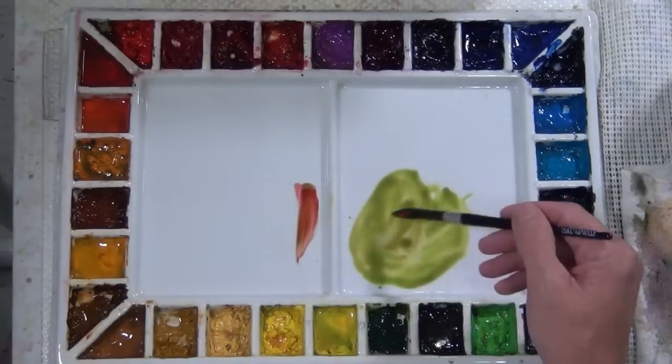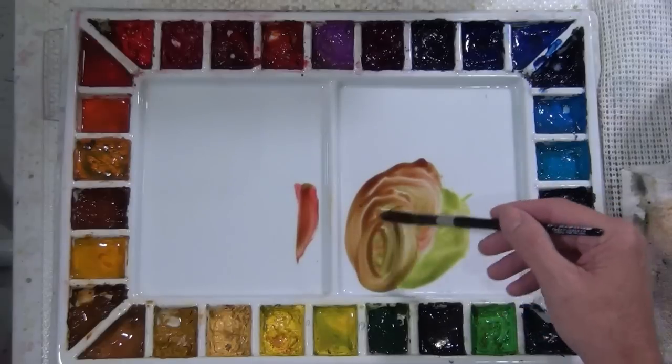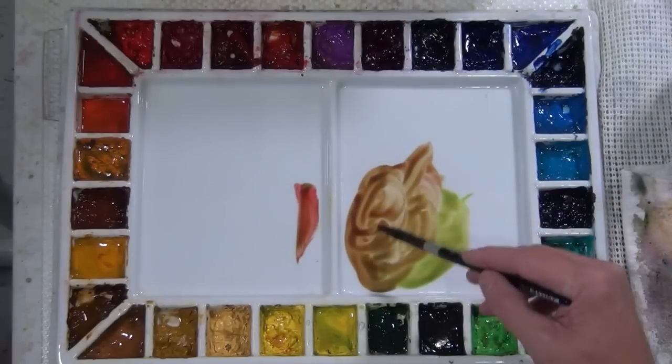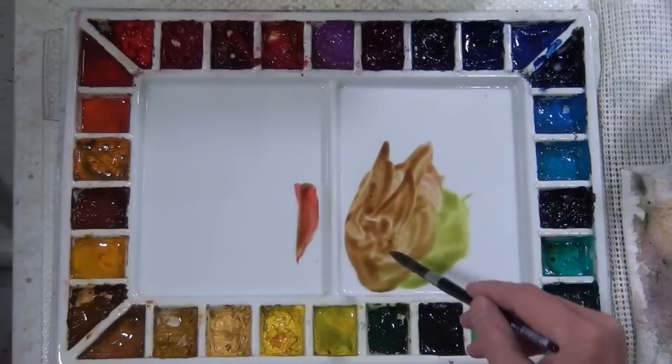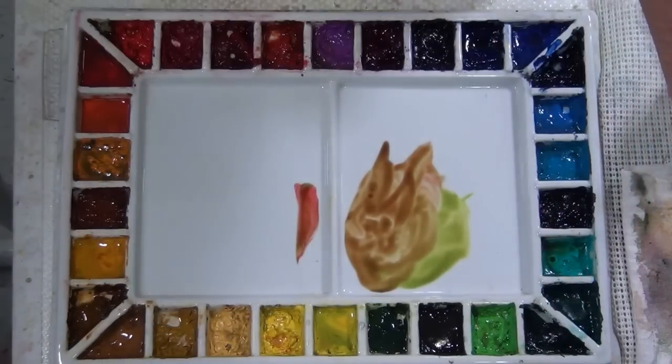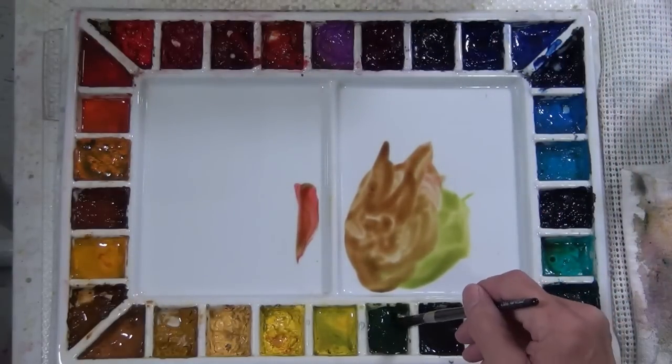One of the things when you're mixing a color on your palette, in this case I'm using these two different pigments. I've added the pyro red to the sap green, and you can see the change it's made to it.